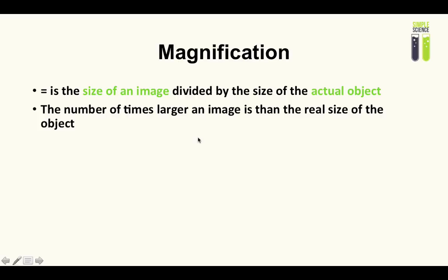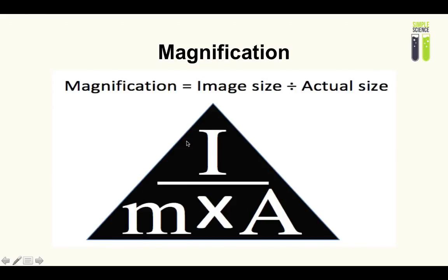Let's take a look at the formula, which I feel is a lot easier to explain. This is the formula triangle, which I recommend remembering. The way I remembered it is MIA — the name Mia. M stands for magnification, I stands for image size (the size of the photograph or the electron micrograph), and A is the actual size. Since we're dealing with cells, always remember that your actual size should be small. If you get something like a thousand millimeters for a cell, you've definitely gone wrong somewhere. Actual size is usually given in millimeters.